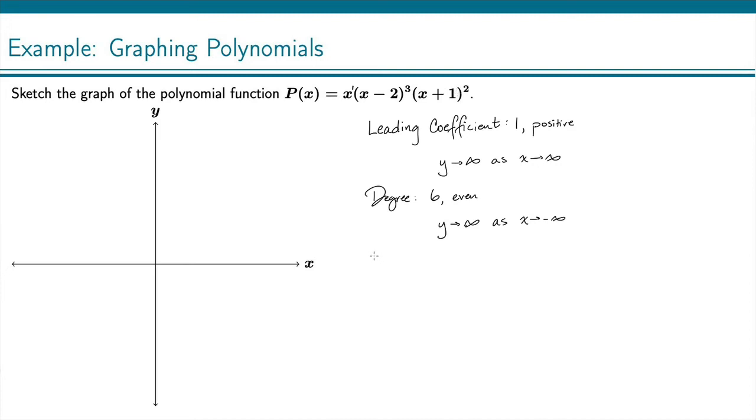And then I'm already in factored form, so I can find my zeros. So from this first factor here, I've got just x equals 0, and that has a multiplicity of 1.